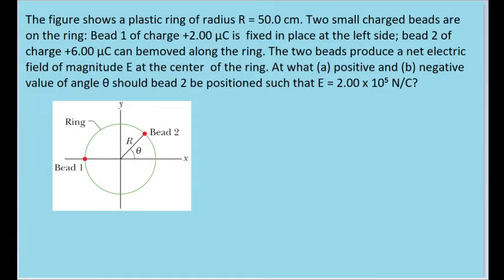We are asked to find two angles here that bead 2 is at, a positive angle and a negative angle. Now notice that the point we're analyzing, the central point, is on the x-axis, and bead number 1 over here, the fixed bead, is also on the x-axis.